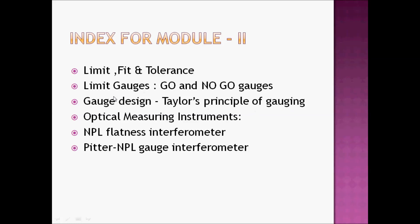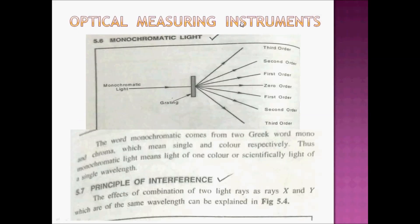In the third part of the module we discuss optical measuring instruments. First, NPL flatness interferometer and NPL gauge interferometer. Optical instruments use monochromatic light - chromatic light means same wavelength, same color light, and more chromatic light.